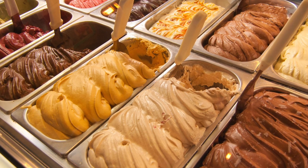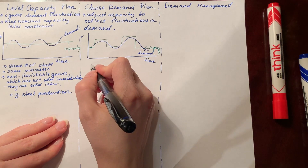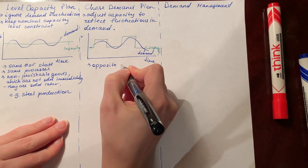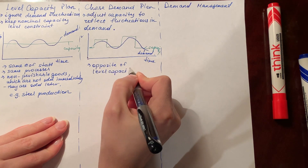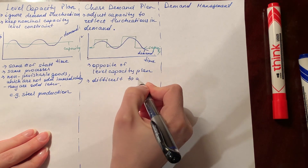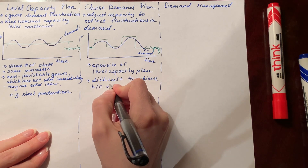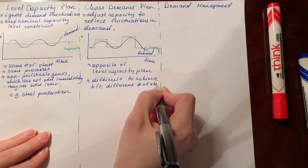Back to the ice cream business example: you will hire temporary staff during peak summer periods to make the most profit during the peak period, and subsequently when demand falls, you will lay off your temporary staff. The chase demand strategy is opposite to the level capacity plan and it is much more difficult to achieve, because you may require different numbers of staff, different working hours, and even different amounts of equipment in each period. It is usually appropriate for perishable goods.